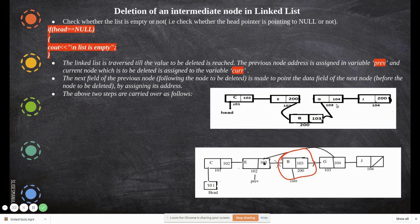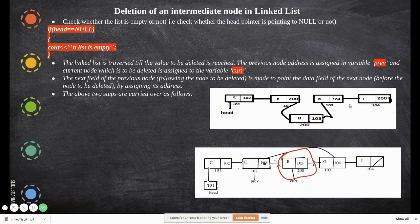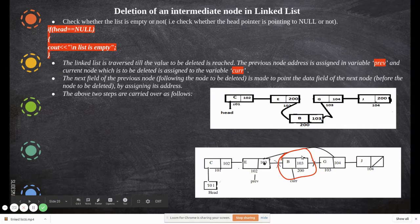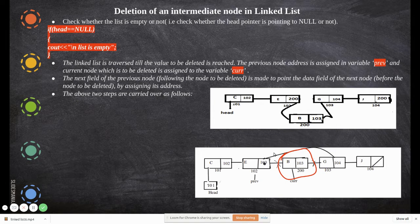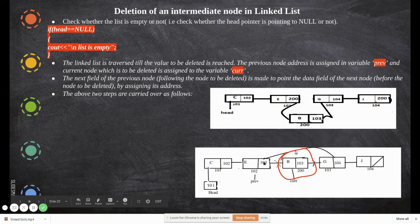The previous node closely follows the current node. When we find the node which we are going to delete — say node B — we need to manipulate the previous node's pointer. Current node's next holds the next node's location, so that address has to be stored into the previous node's next field, as shown in the picture.